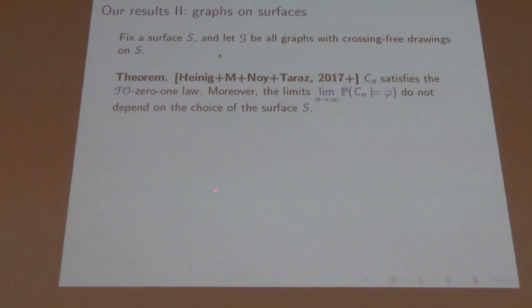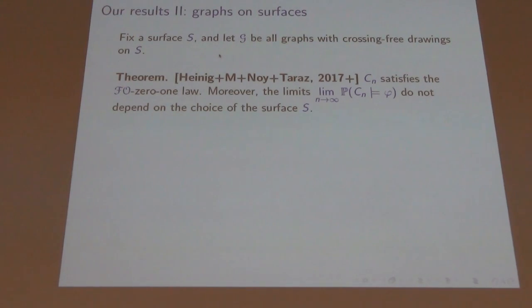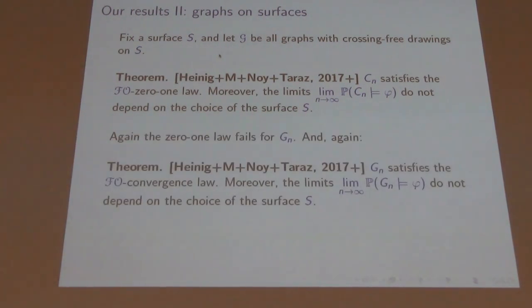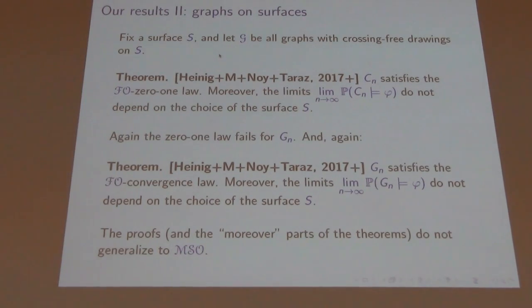We also showed that for graphs drawable on a surface other than the plane — like the torus — you can still prove the first-order zero-one law for connected graphs, but we can no longer show the MSO zero-one law. Also, the values of these limits don't depend on the choice of surface. This gives some indication that you cannot capture the surface in terms of first-order logic. And if we take all graphs instead of connected graphs, we get the convergence law.